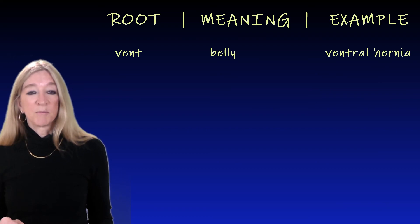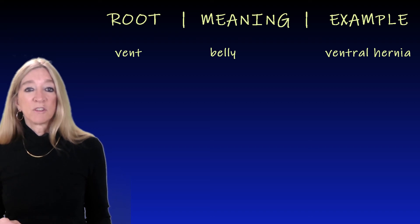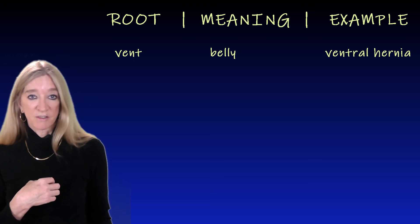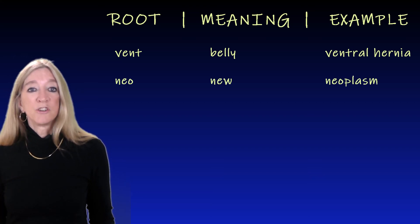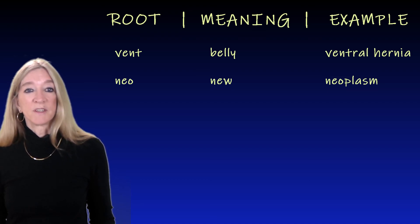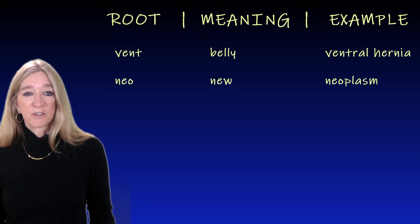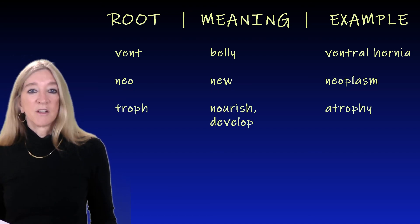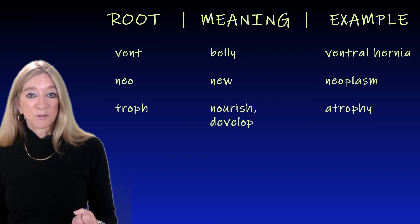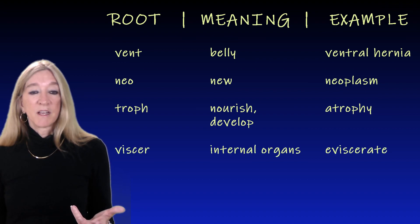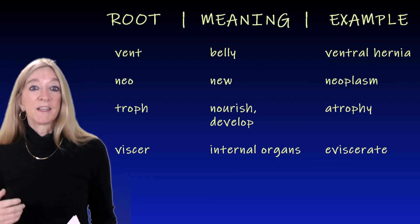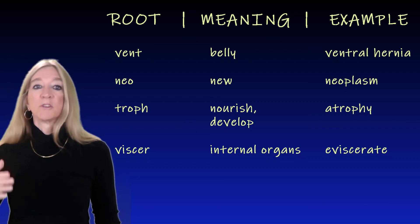The next root, 'vent,' meaning belly. An example is ventral hernia, a hernia in the belly. We also saw 'vent' in the word ventricle, which literally means small belly but actually means a chamber of the heart. The next root, 'neo,' meaning new. Neoplasm is an example — we've seen the root 'plas' meaning formation; a neoplasm is an abnormal growth of new cells. You'll see that root in terms like neoclassical and neoconservative. The next root, 'troph' or 'trophy,' meaning nourish or develop. Atrophy is underdevelopment. Muscular dystrophy is bad development of a muscle. And 'viscer,' meaning internal organs — eviscerate commonly means to remove the organs, but also means to protrude through a surgical incision.